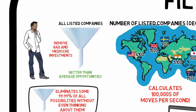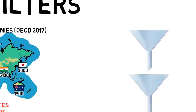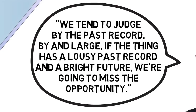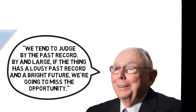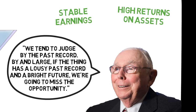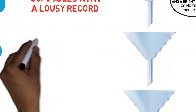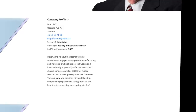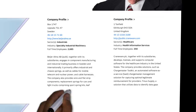Filters can be fairly personal, but let's talk about what Charlie Munger and Warren Buffett typically use in their investment approach. Their first filter is the accounting figures of a company. Munger has said: 'We tend to judge by the past record. By and large, if the thing has a lousy past record and a bright future, we're going to miss the opportunity.' A company passes this filter if it has a combination of historically stable earnings and a higher than average return on assets, with earnings distributable to shareholders. Secondly, they apply their circle of competence — just by reading the description of a company on, for instance, yahoo.com, you can often filter out lots of companies.